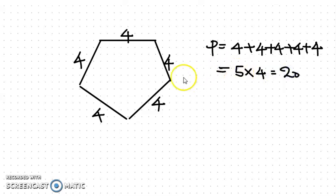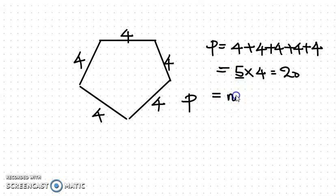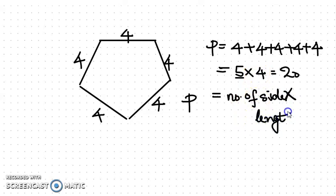The formula is: number of sides into length of each side equals perimeter of a regular polygon. Regular means all sides are the same. If all sides of a polygon are equal, that polygon is known as a regular polygon. In a regular polygon, perimeter equals number of sides into length of side.